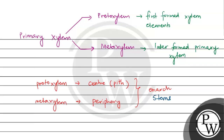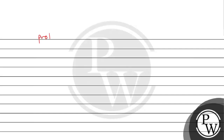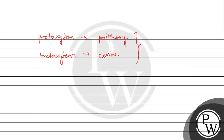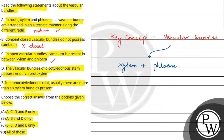On the other hand, when the protoxylem is at the periphery and metaxylem lies towards the pith or center, it is called the exarch condition, and this can be seen in the roots. So in the question, the vascular bundles of dicot stems possess endarch protoxylem — this is correct for stems, which means the endarch condition applies here.